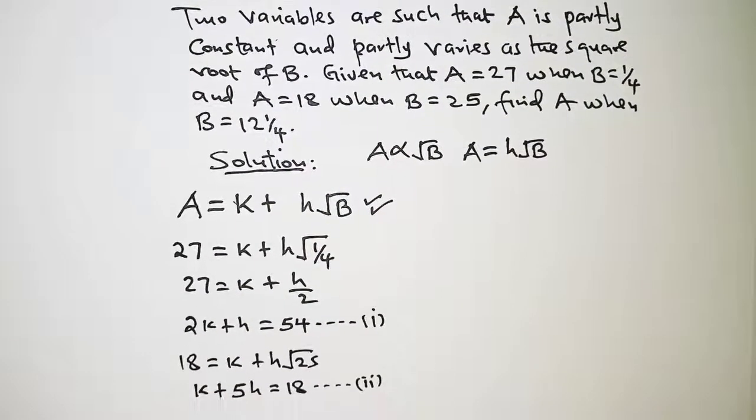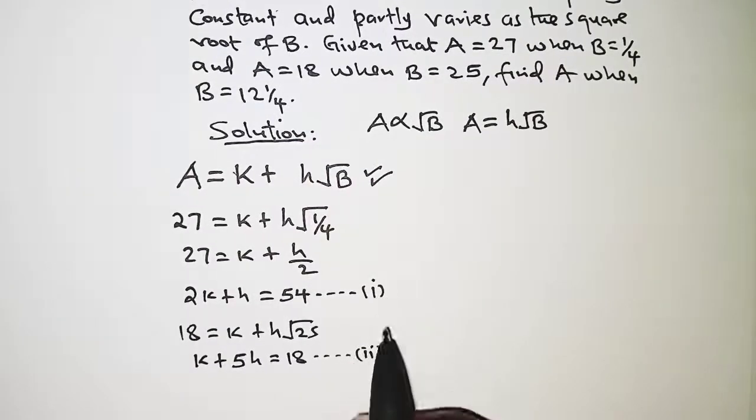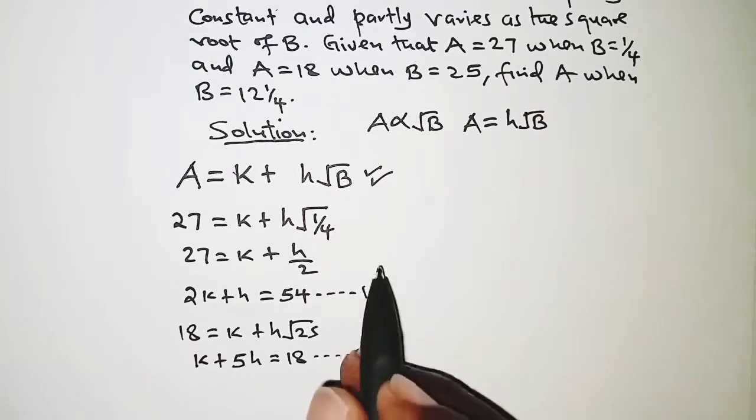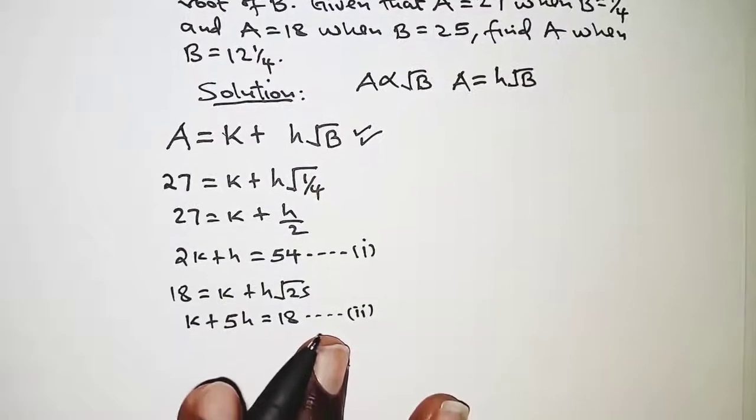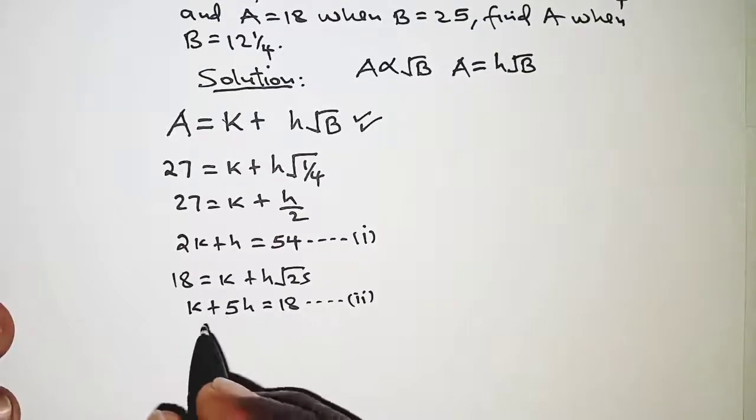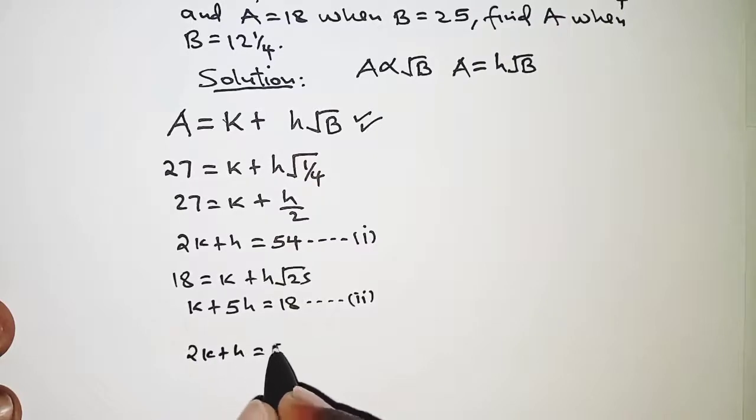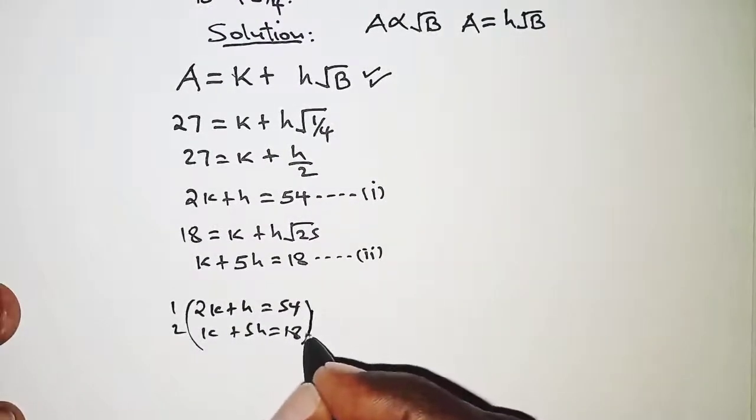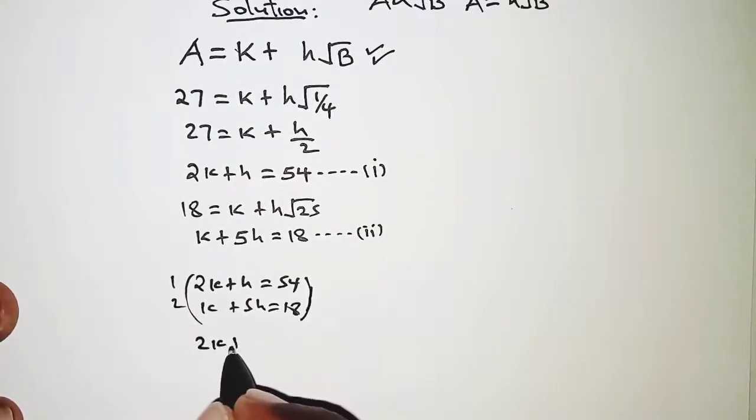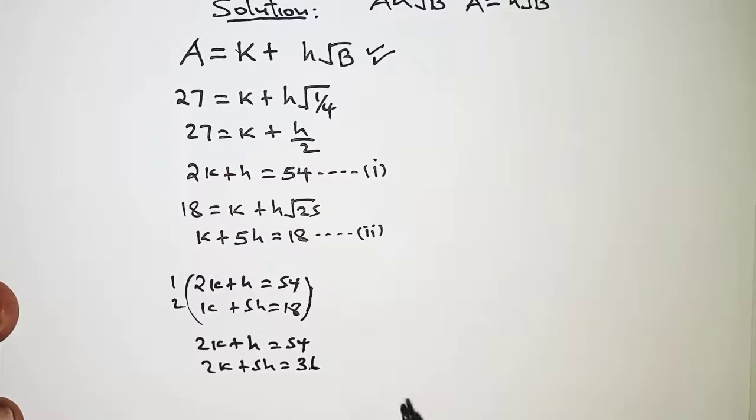We are going to solve the two equations. We have simultaneous equations; we are going to solve them simultaneously. We are going to apply elimination method. If we have 2k plus h is 54, k plus 5h is 18, we will have to multiply these by 1 and 2, and that should give us the set of equations as follows: 2k plus h is 54, 2k plus 5h is 36.